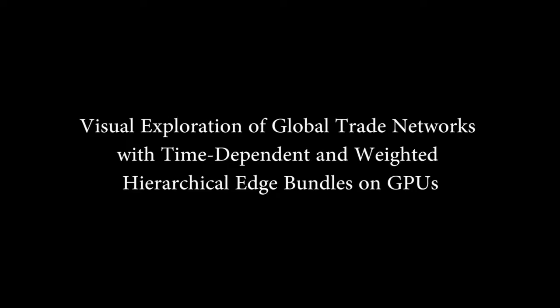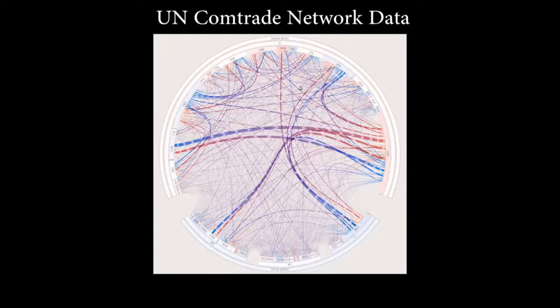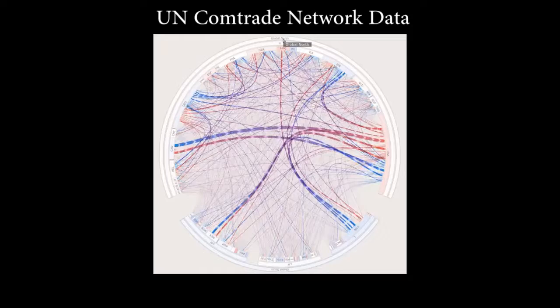The UN ComTrade Database represents the world's largest repository of bilateral trade data, covering more than 50 years in 170 countries. After a harmonization step to resolve bilateral trade discrepancies, the dataset can be represented as a set of complex, time-varying edge-weighted graphs containing trade flows for a number of different commodity classes.